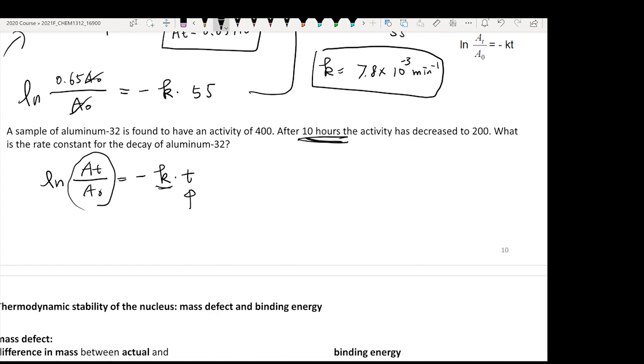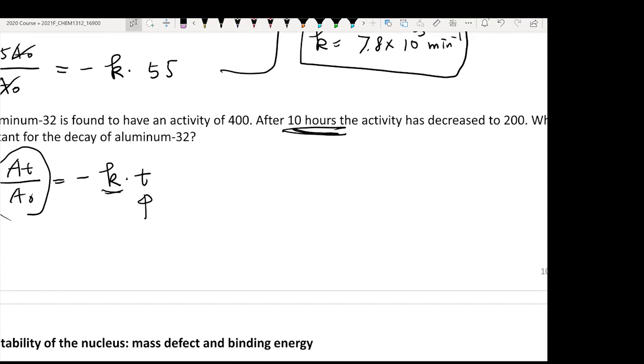Here it says in the beginning you have activity of 400. That means your reactant itself is going to provide 400 activity. After 10 hours you still have 200 activity. So you can use that activity as an indication of how many original reactants you still have. That means after 10 hours your At equals 200, but your A0 equals 400.